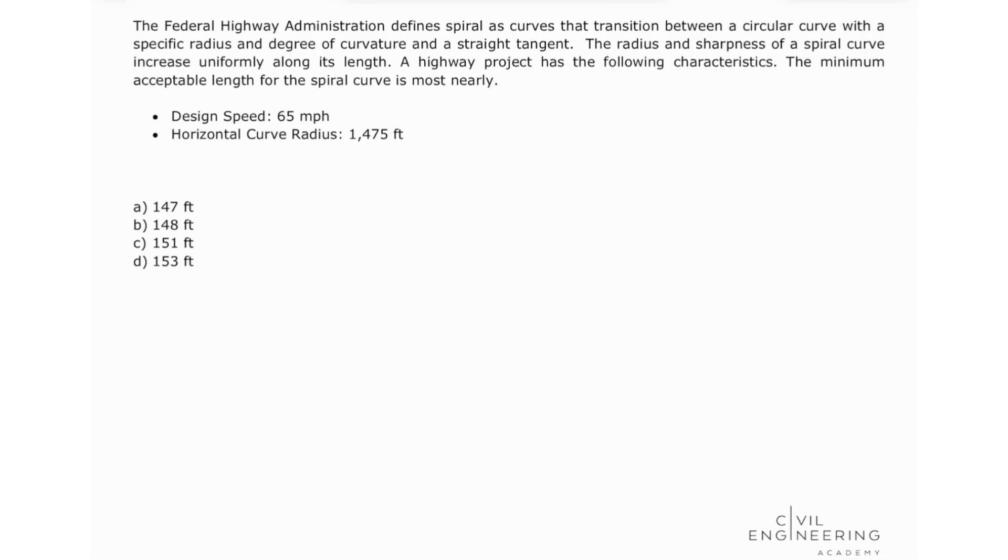So the first thing we're going to do, we're going to open our AASHTO green book on page 376 and we're going to look in the section for the minimum length of spiral.